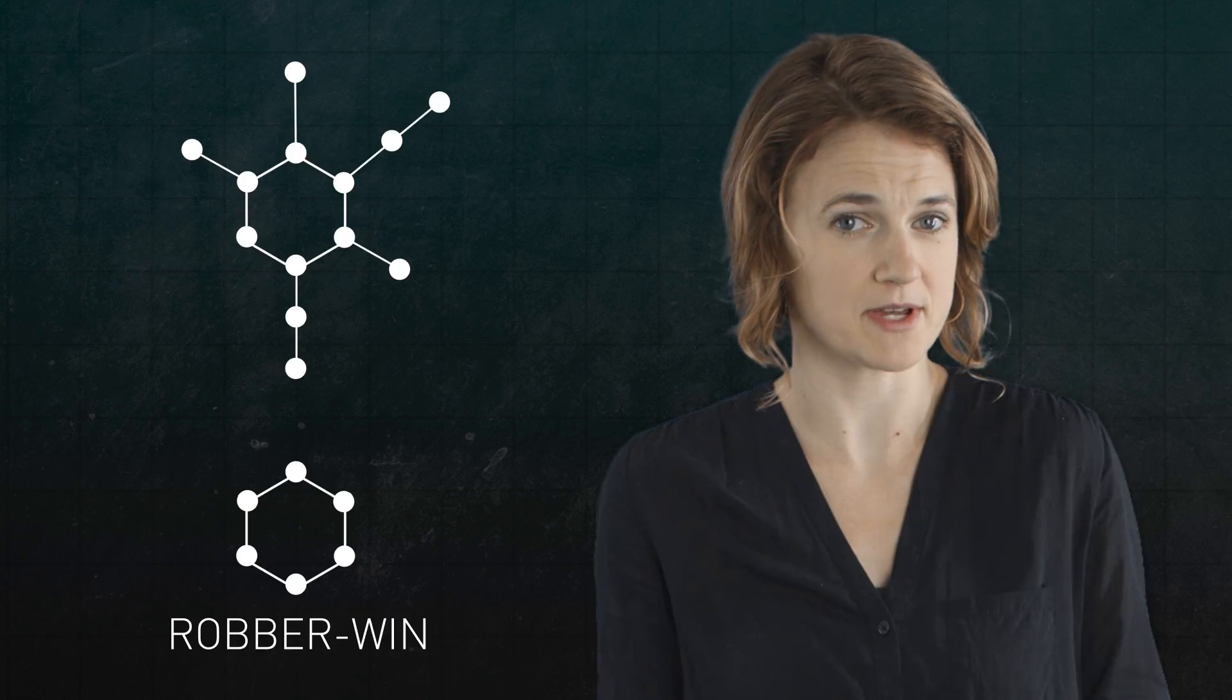What if we'd started with this graph? Then, after removing the pitfalls, we'd be left with this graph. And we know that on the cycle, a graph with no pitfalls, the cop can never trap the robber. This graph must be robber win. Therefore, our original graph must have also been robber win.